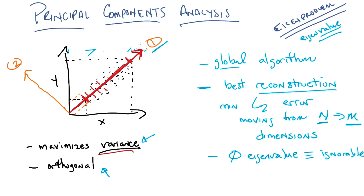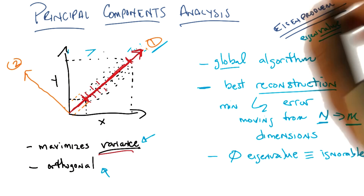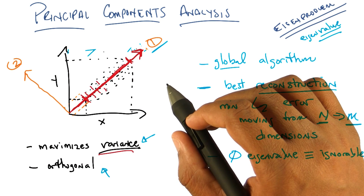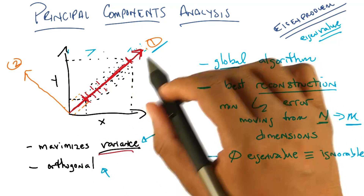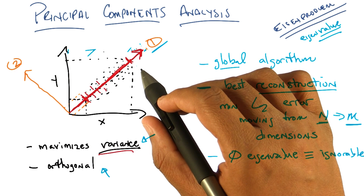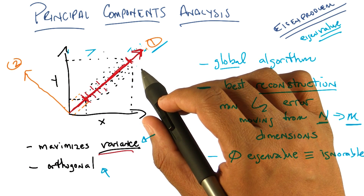So one question I have is: in the example that we just worked through, there was a blob of data, and when we drew the red line through the maximum variance direction, it went through the XY origin. Does it have to? Is it necessarily the case, or is the algorithm restricted to put things through the origin?